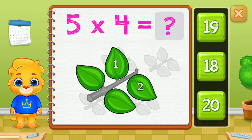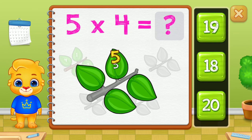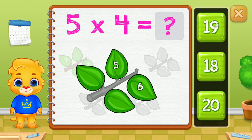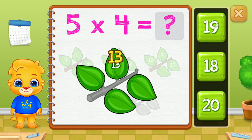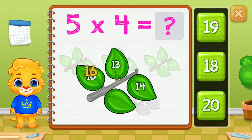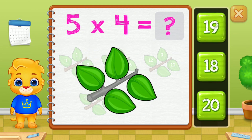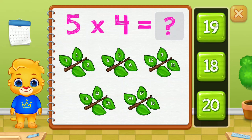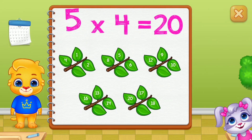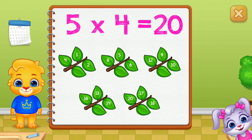One, two, three, four, five, six, seven, eight, nine, ten, eleven, twelve, thirteen, fourteen, fifteen, sixteen, seventeen, eighteen, nineteen, twenty. Twenty! Woohoo! Five groups of four equals twenty.